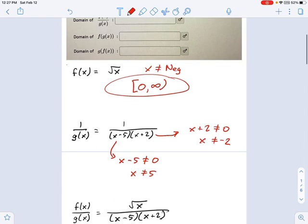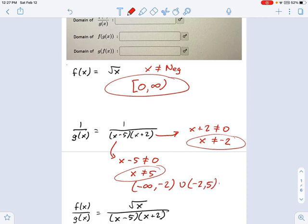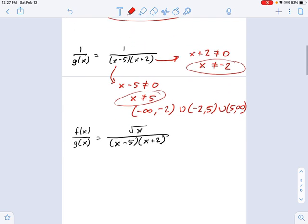So we take our two domain restrictions, negative 2 and 5, and just wrap those together into a domain, which goes from negative infinity to the first domain restriction, which is negative 2, and then union negative 2 to positive 5, and then union 5 to infinity. Those are all the numbers that exist except for our domain restrictions.